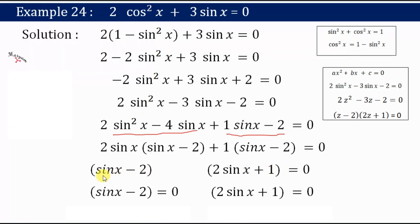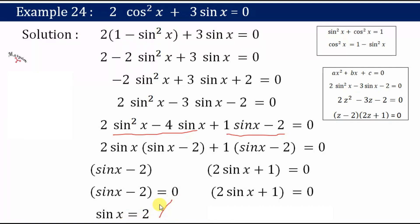We equate each factor separately: sinx - 2 = 0 gives sinx = 2. But sinx = 2 is not possible because the value of sine lies between -1 and +1. So this case is rejected.